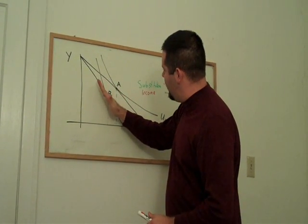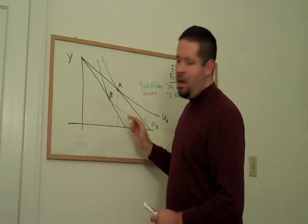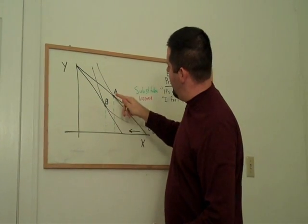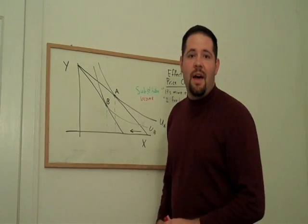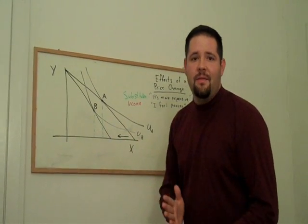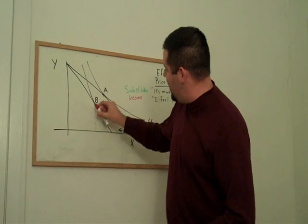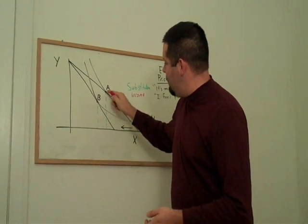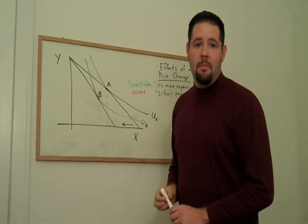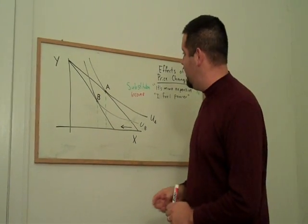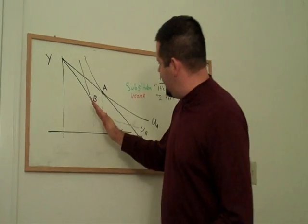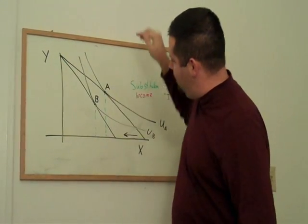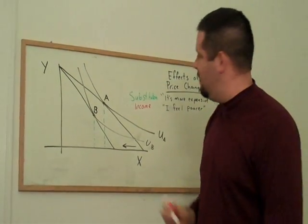Because if we brought this budget line out, it would actually cut through the old budget line, and he would be able to achieve a higher level of utility. So we're not going to give this individual as much money as he or she would need to get back to bundle A. In fact, we could give just a little bit less. One way to visualize this is to ask: how can we shift this out parallel and be just tangent to our old indifference curve?